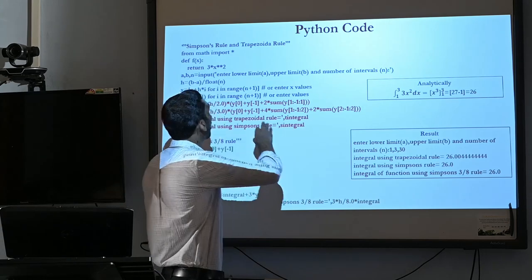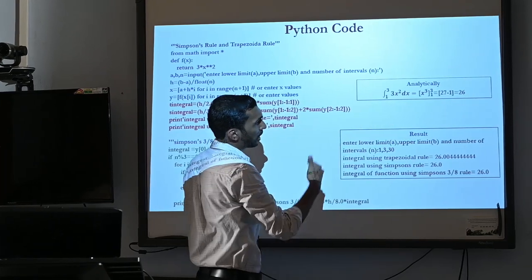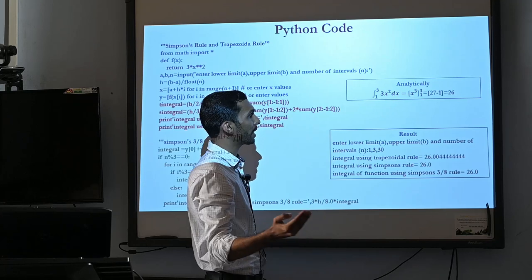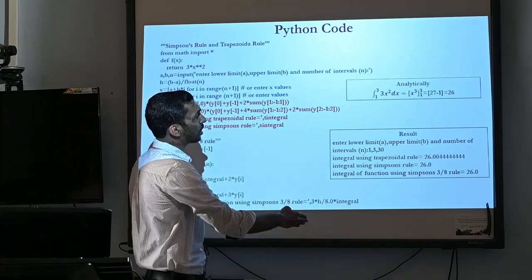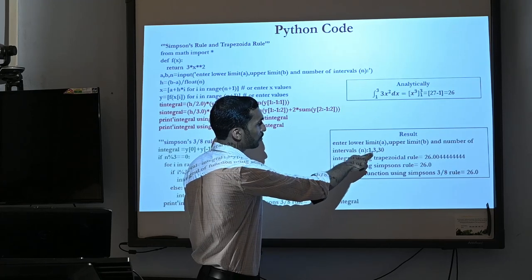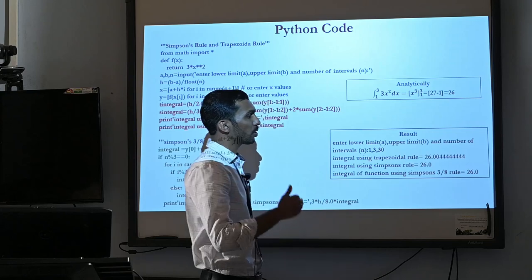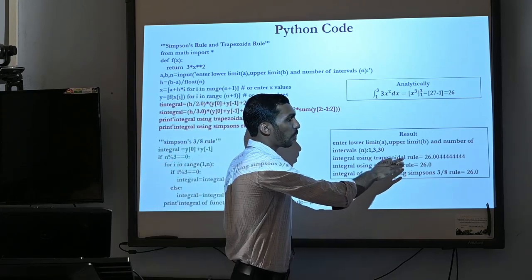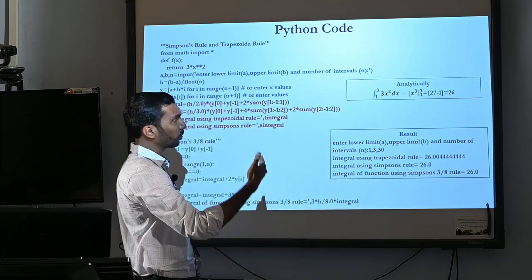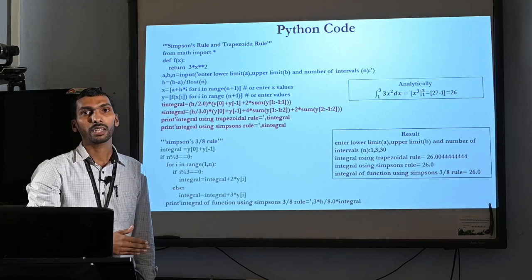Analytically, our function is 3x², so the integral from 1 to 3 of 3x² dx equals x³ evaluated from 1 to 3, which gives 27 minus 1, equal to 26. The exact result is 26. Computationally, entering a equal to 1, b equal to 3, and number of intervals equal to 30, the trapezoidal rule gives 26.004, Simpson's 1/3 rule gives the exact 26.0, and Simpson's 3/8 rule also gives 26.0. These are very accurate results, close to the analytical result. Thank you for watching.